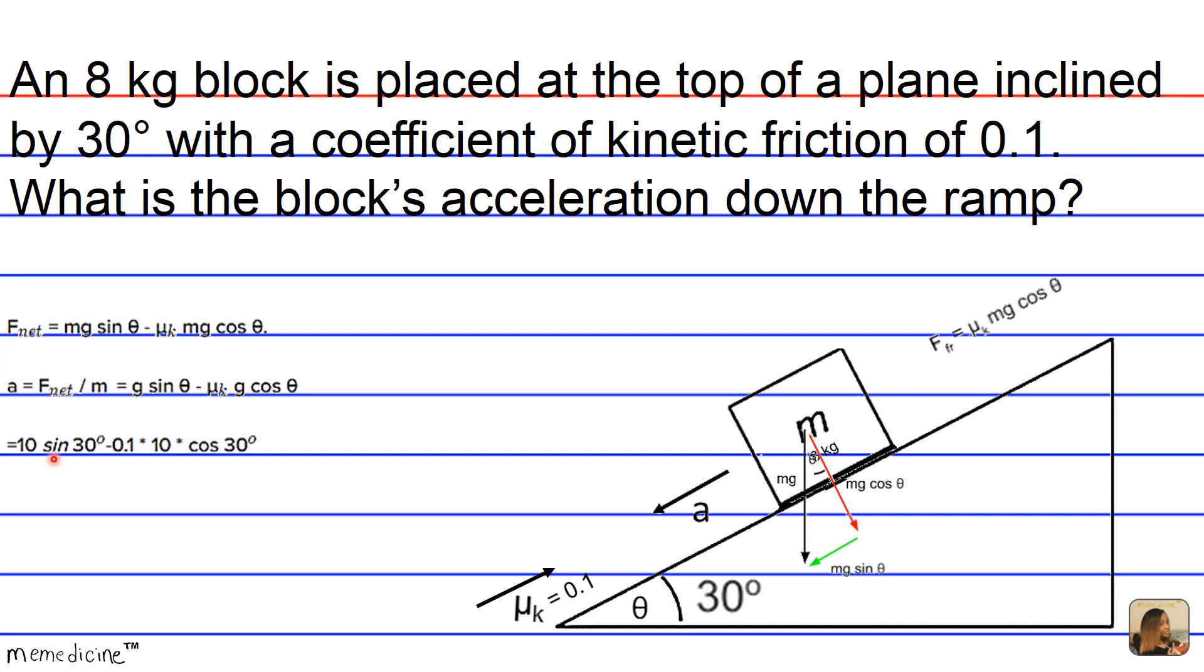Alright, so we have 10 the sine of 30, we just plugged in our values, minus 0.1 times the cosine of 30.